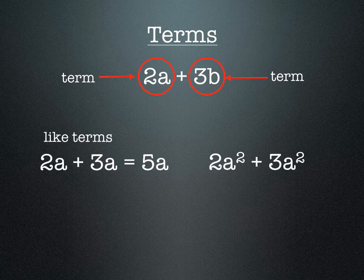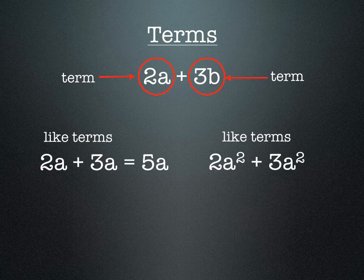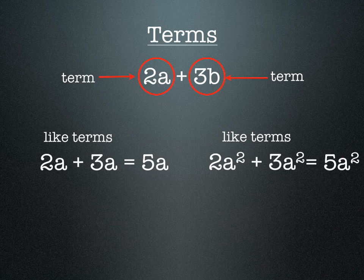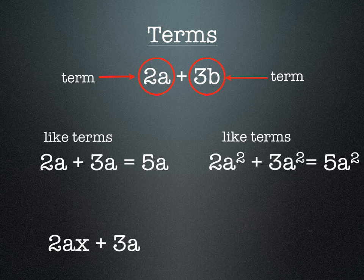Same thing with 2a² + 3a² - these are like terms so we can add them together to make 5a². If we have 2ax + 3a, you'll notice the letter combinations here are not the same, so these are unlike terms and we can't add them up.